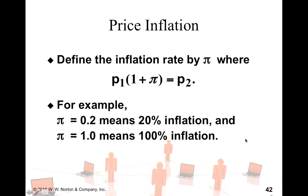Then pi becomes the inflation rate. So, for example, if pi is 0.2, then it means there is 20% inflation rate. So, p2 is going to be 20% higher compared to p1. If pi is 1, then it means there is 100% inflation. So, p2 is going to be 100% more than p1, so it's basically going to be twice.